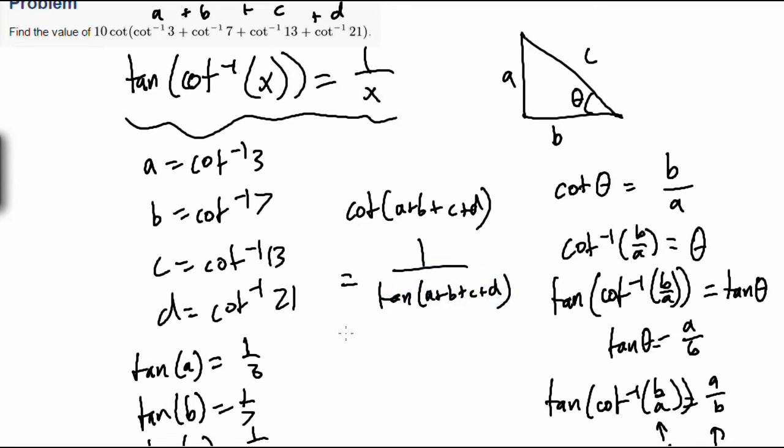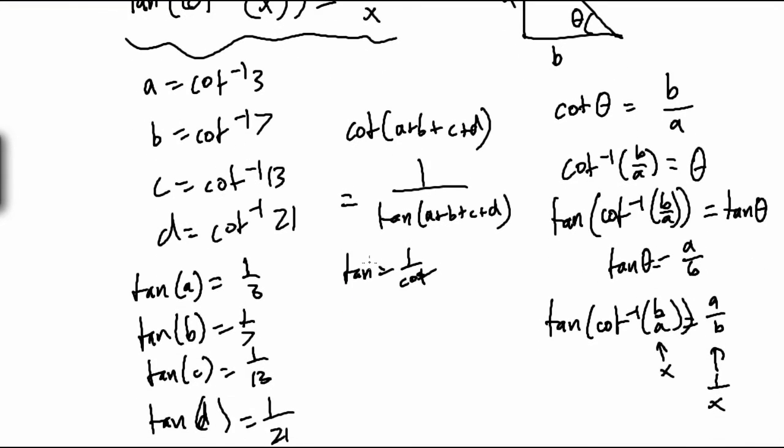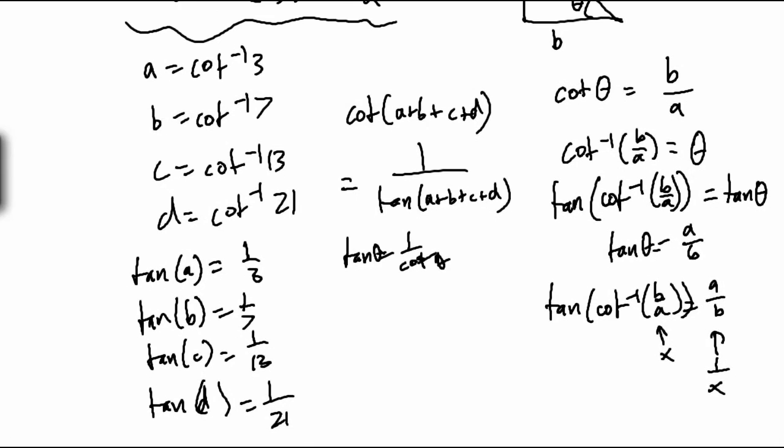Because remember, tangent is just 1 over cotangent. It's just how it works. Tangent is some quantity, just 1 over cotangent. So we should try to find out tangent A plus B plus C plus D.